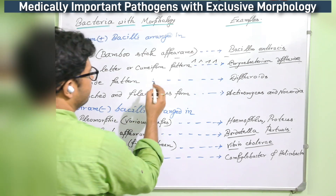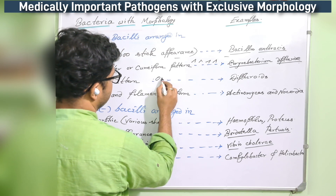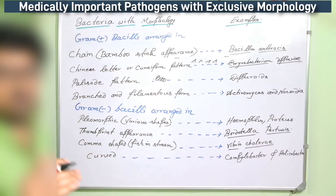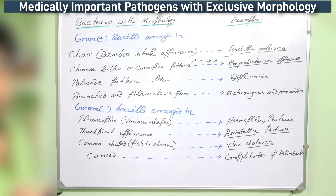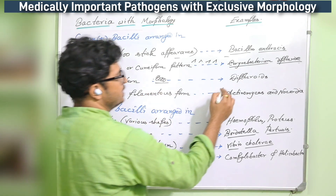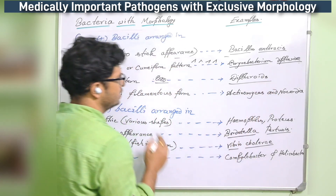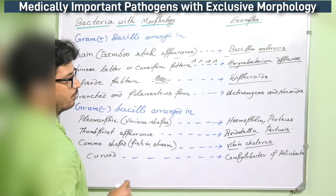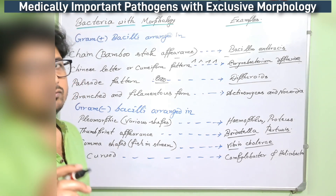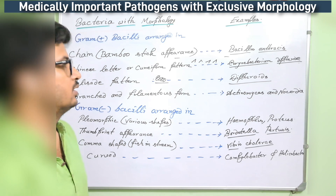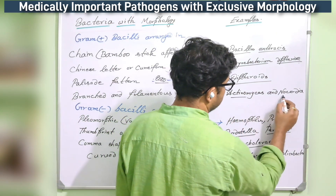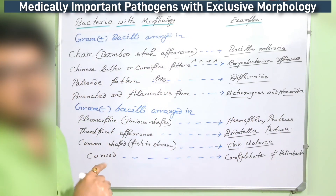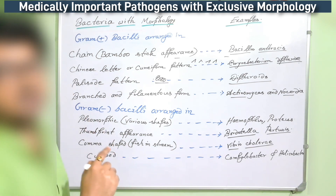Then the palisade pattern — similar to the palisade arrangement of chlorophyll molecules found in leaf cells — is also shown by diphtheroids under the microscope. Next are branched and filamentous forms. We normally see these under the microscope in fungi, but Actinomyces and Nocardia are bacteria that show fungus-like filamentous or mycelial forms under the microscope — but they are actually bacteria.